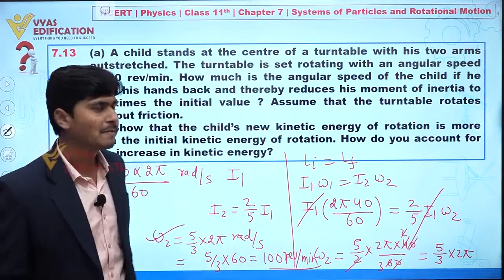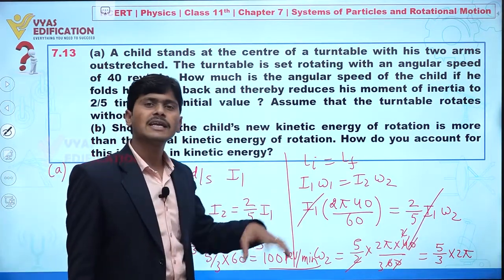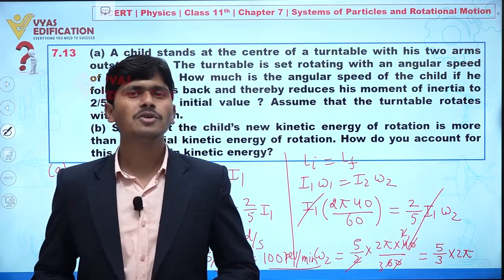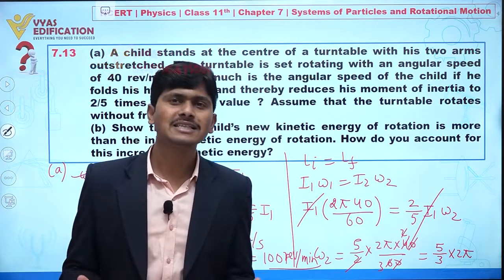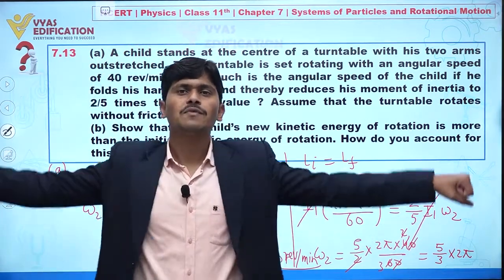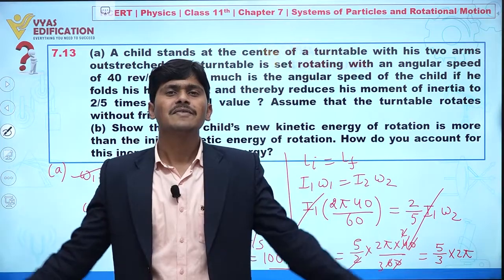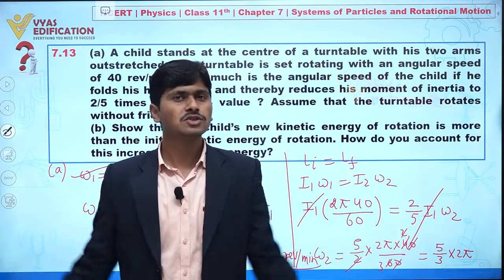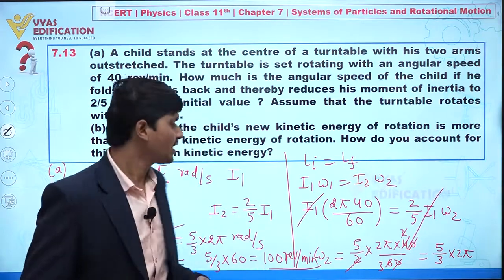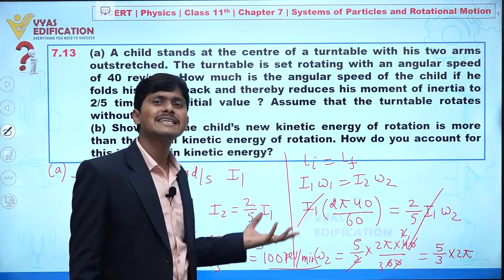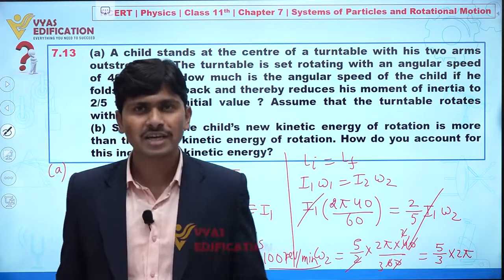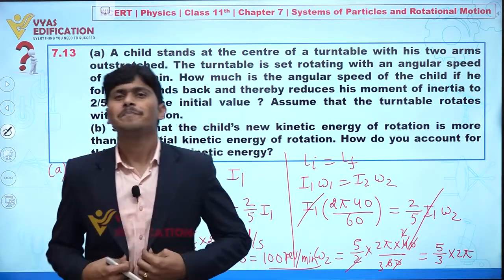Since the final angular velocity is 100 rpm compared to the initial 40 rpm, the final kinetic energy is definitely greater. The important point is: where does this extra energy come from? When you fold your arms, you use your internal (muscular) energy, and that internal energy converts into the increase in kinetic energy.